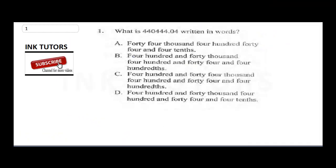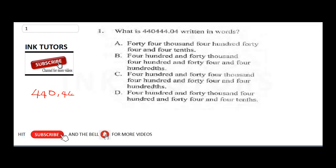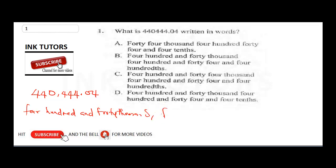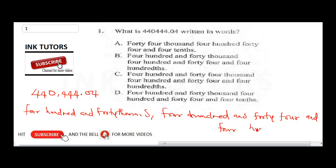Question one: the number is 444,400.04. We are going to write what it means, then check which option is correct. This is four hundred and forty-four thousand, four hundred and forty-four, and four hundredths. Option A — 40,44 — is wrong.